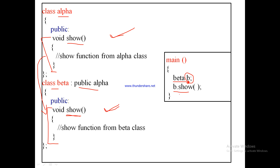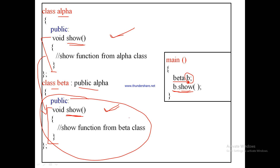When we write b.show(), which function will be called — the one in the base class or the one in the derived class? The answer is it will execute show from the derived class, because the object b is of the derived class. The compiler resolves this without ambiguity. If we want to execute the base class member function, we need to do something extra at that point.